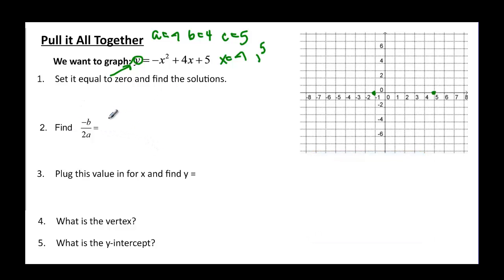Negative B over 2A. Negative B, well, B is 4, so that's going to be negative 4. And A is negative 1, so 2 times negative 1 means that I have negative 4 over negative 2, which ends up just being 2. And this is the x of my vertex.